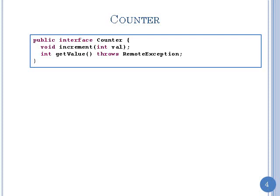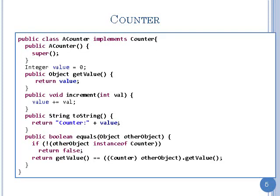The equals method checks if the value passed in is a counter or not — if it's not, we know they're not equal; otherwise, it checks if the values are the same. If we are writing classes properly, that's what we would do — we would override equals. Now, imagine that you didn't see all of the stuff I showed you earlier. How would you go and extend this program to make it distributed?